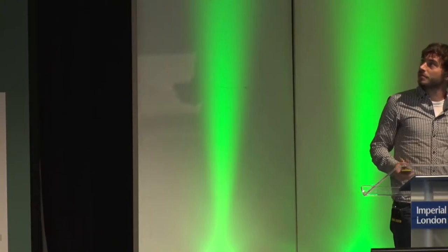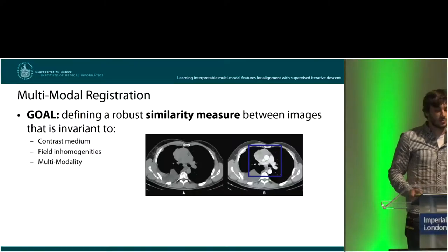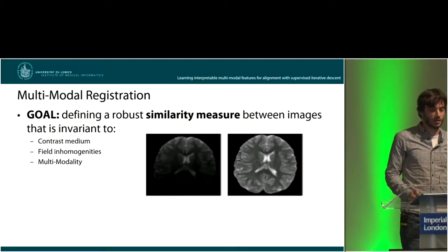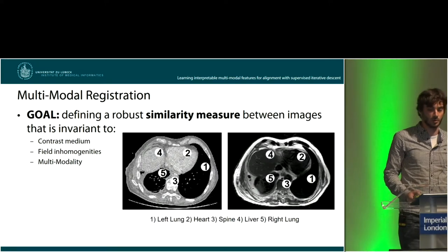The challenging thing about multimodal image registration is that you somehow have to define the similarity measure between these images, and that has to be invariant and robust — for example, to the presence or absence of contrast medium, to field inhomogeneities as they are common in MRI imaging, and of course to multimodal input.